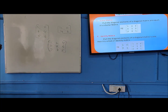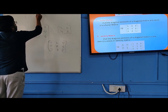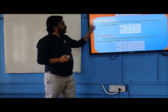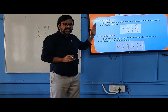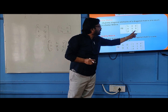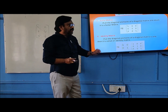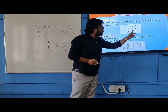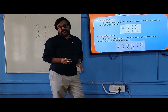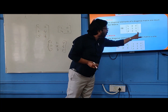Next comes the scalar matrix. A scalar matrix is a type of diagonal matrix. In a diagonal matrix, if the diagonal elements are all equal, then we call it a scalar matrix.